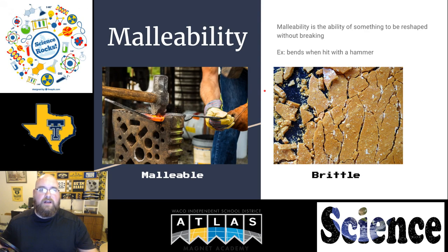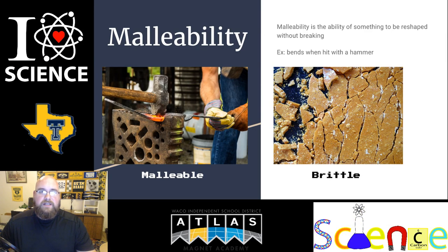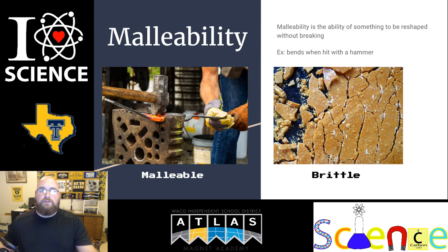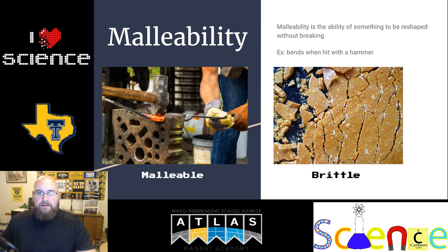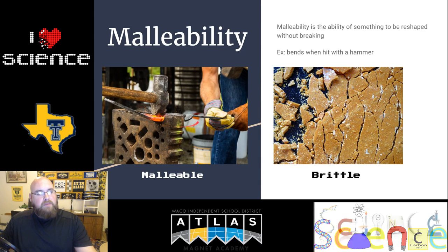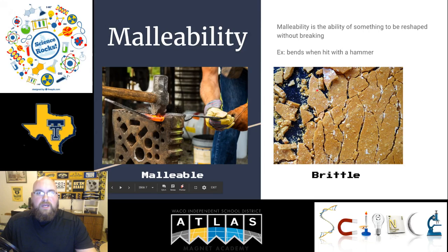Next we have malleability — a fun one with great examples. Malleability is the ability of something to be reshaped without breaking. Imagine hitting it with a hammer: does it bend or break? If it bends like metal, we consider it malleable — able to be bent without shattering. If it is brittle, hitting it will cause it to break up into many different pieces.